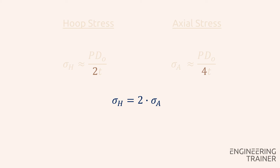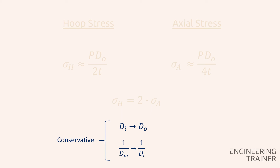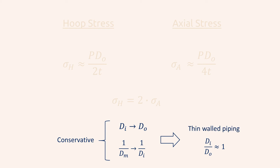We have to consider that we arrived at these expressions using simplification steps like replacing the inner diameter with the outer diameter and the mean diameter with the inner diameter in the denominator. Both steps were acceptable since they provided a conservative approach, but they do cause an inaccuracy in the calculated stress result. This inaccuracy is small as long as the inner diameter and the outer diameter are close to each other — in other words, the ratio between both is close to 1 — which is considered to be true for so-called thin-walled piping. Typically a ratio of 0.9 is considered, so a pipe thickness that is 1/20th of the outer diameter. If the pipe thickness is significant, our expressions are still conservative but with high inaccuracy and therefore lose their value.